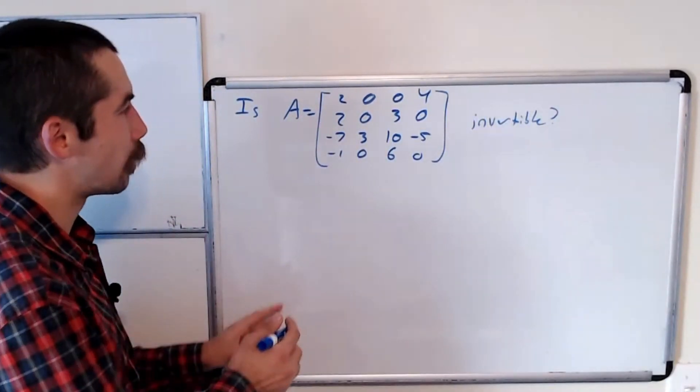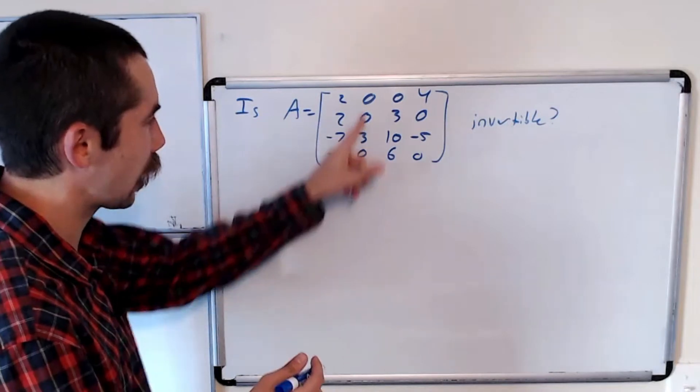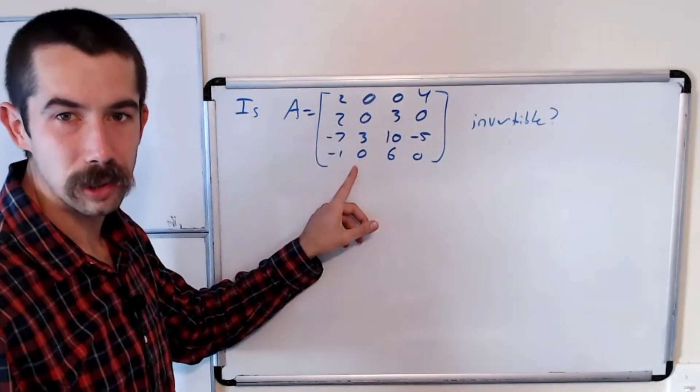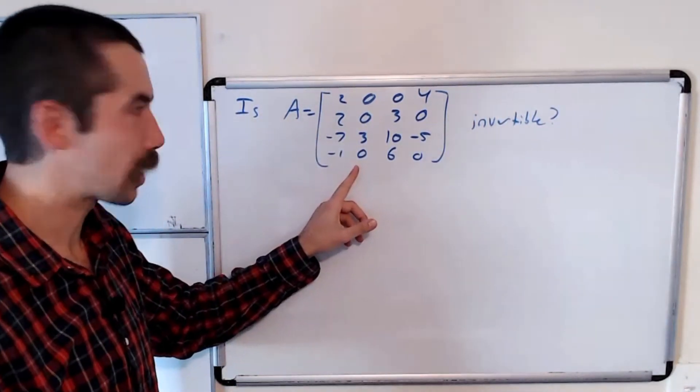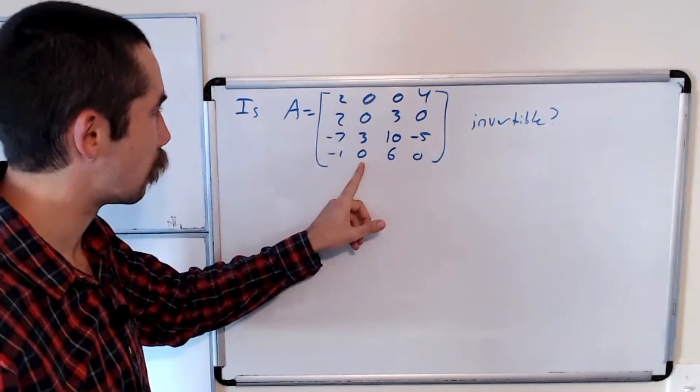Okay, and so to compute the determinant of this matrix, notice this second column has a lot of entries that are zero. So we could do the cofactor expansion along column three.